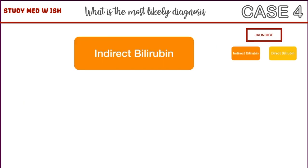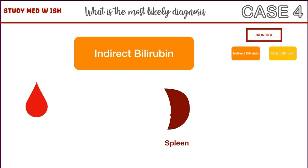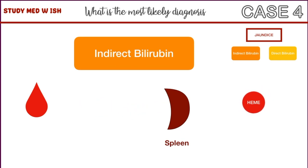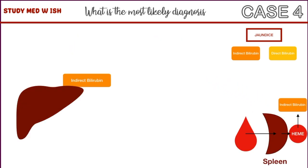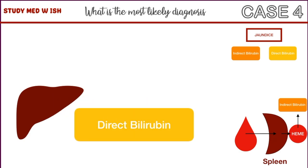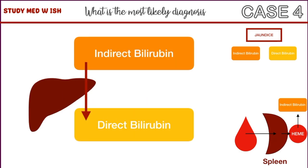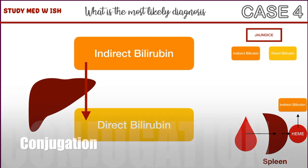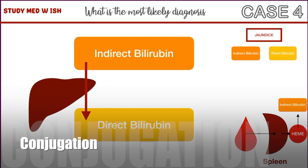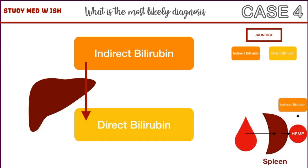Let's first focus on indirect bilirubin. Red blood cells get broken down in the spleen. Here, the heme part of red blood cells gets converted to indirect bilirubin. Indirect bilirubin then goes to the liver and gets converted to direct bilirubin. This process is known as conjugation. If a patient has high levels of indirect bilirubin, it's either due to excessive hemolysis or insufficient conjugation.